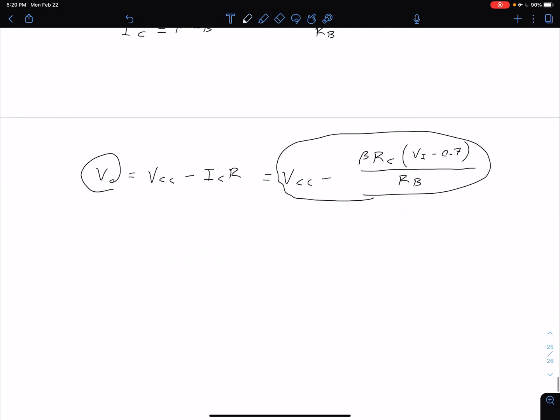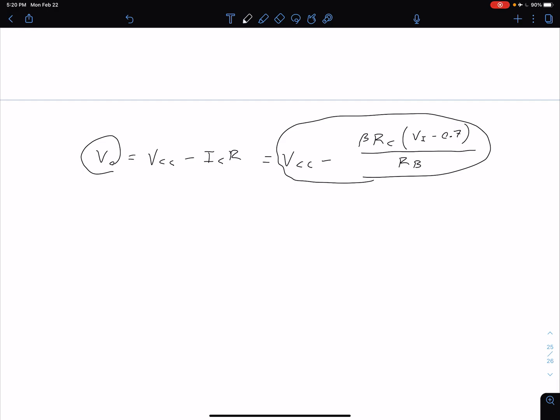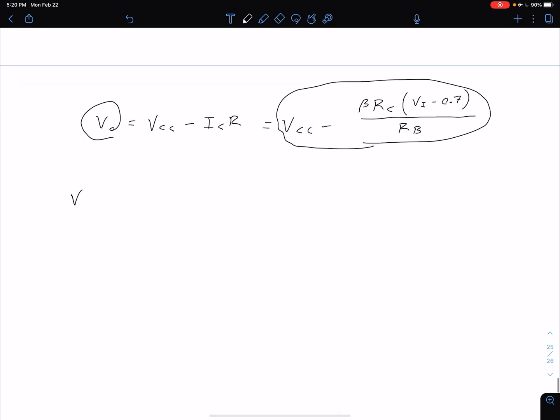What we can see from this equation and what we understand intuitively from the previous example is as this VI continues to increase, VI increasing is going to lead to our collector current increasing and ultimately is going to lead to our voltage across RC increasing. So that's this term right here - voltage across RC is increasing and what that means is that our V0 is going to be decreasing.